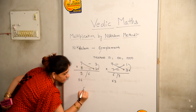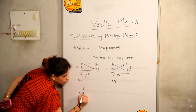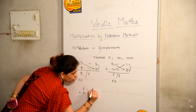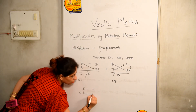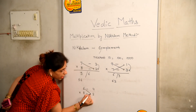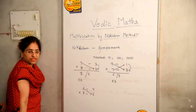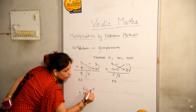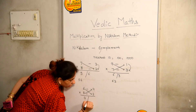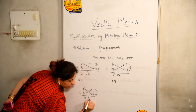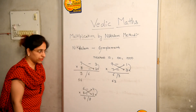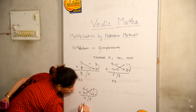Let us take one more example. We need to multiply 6 into 8. Now the Nikhilam of 6 is 4, and the Nikhilam of 8 is 2. Now if we subtract 2 from 6 or 4 from 8, we get 4. And 4 into 2 is 8. That will be 48. Your answer will be 48.